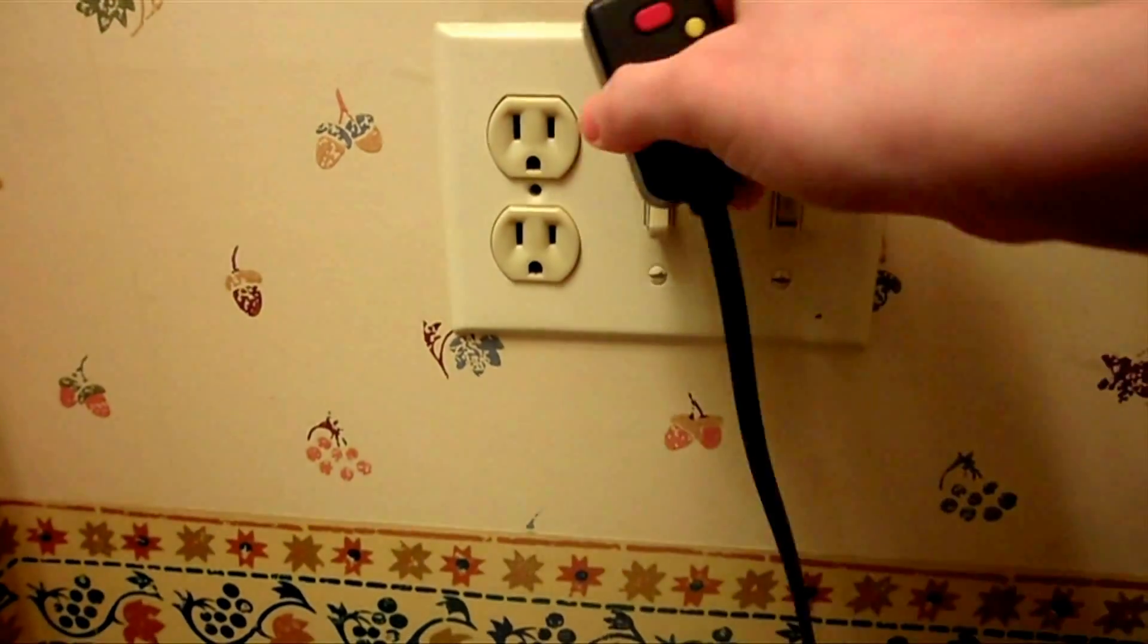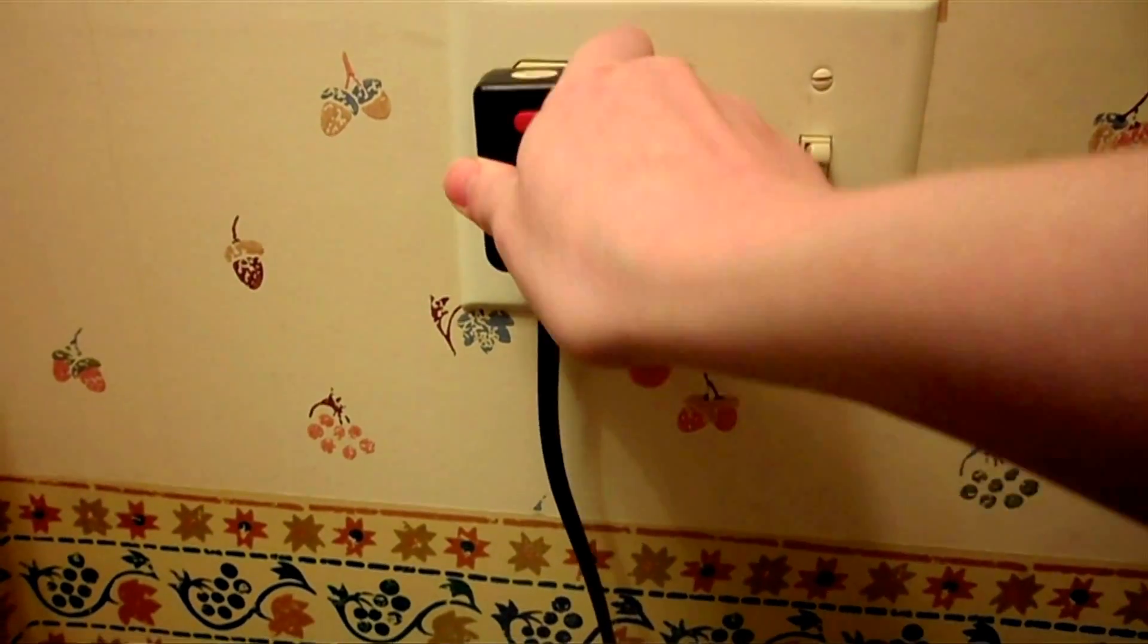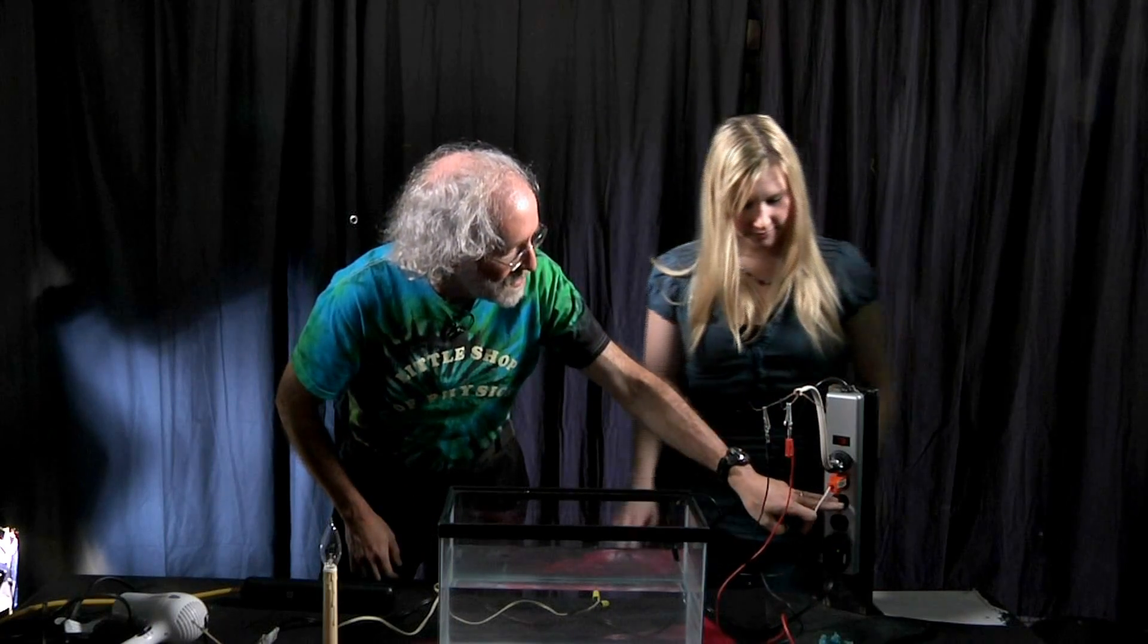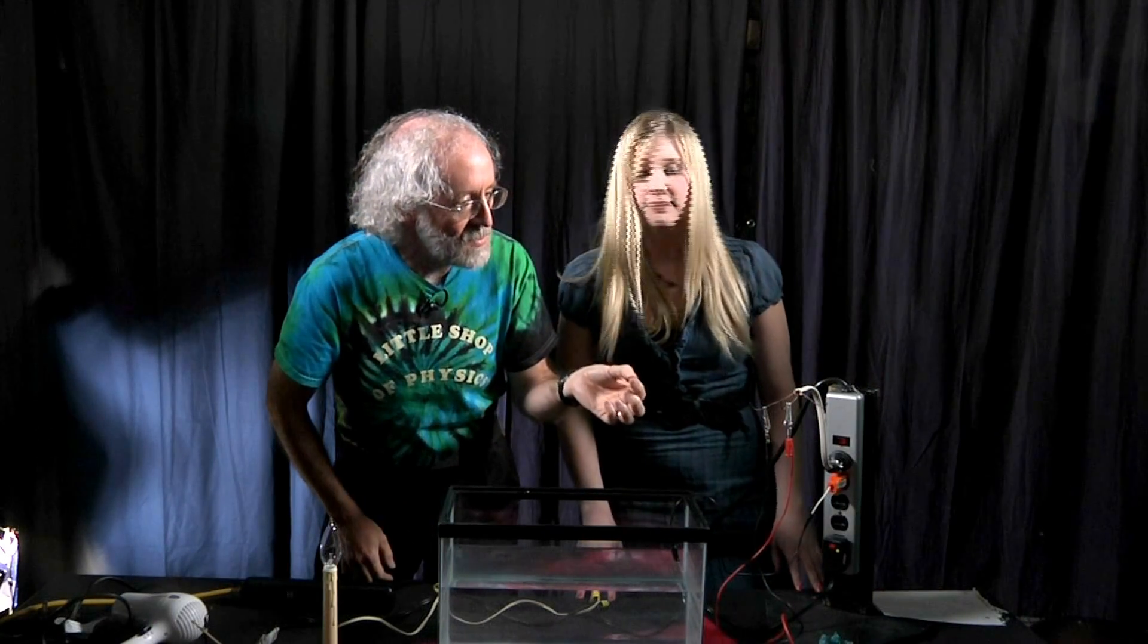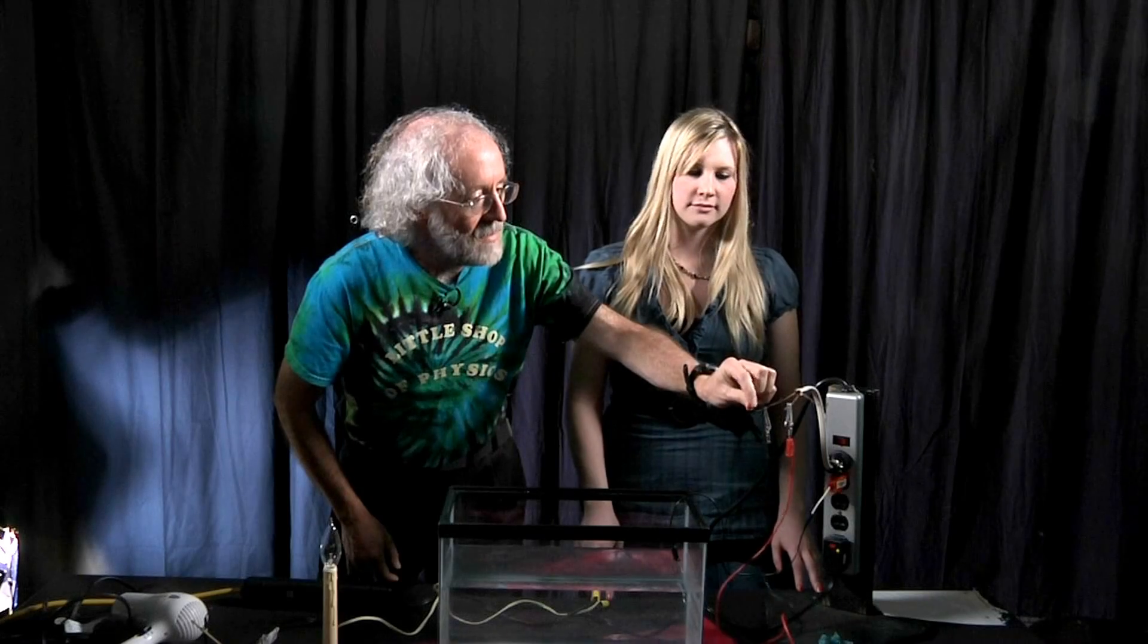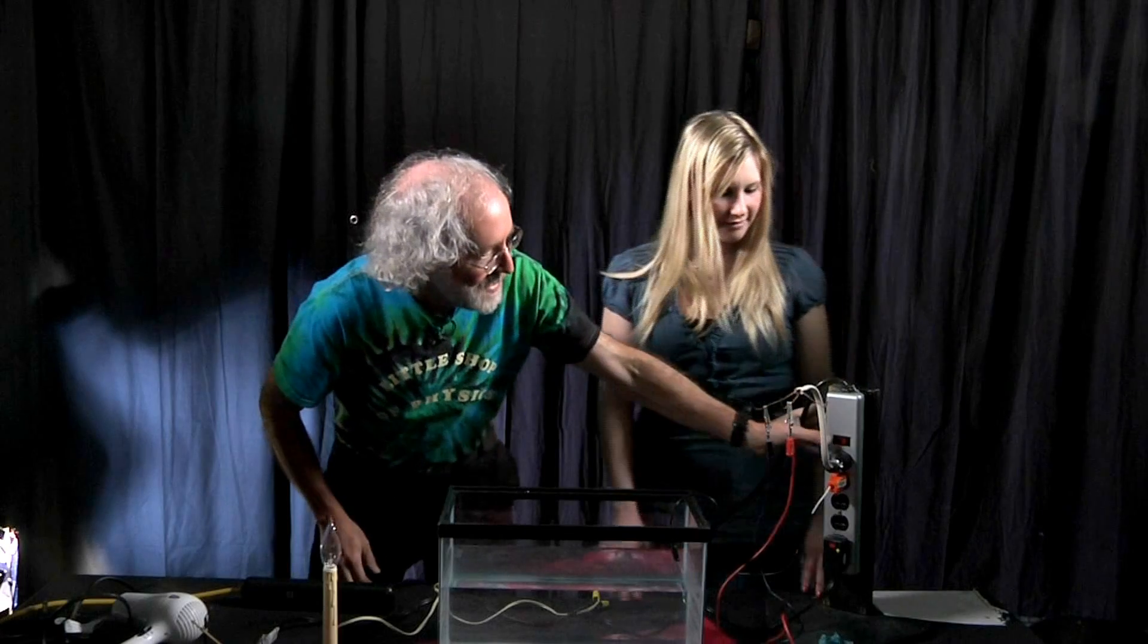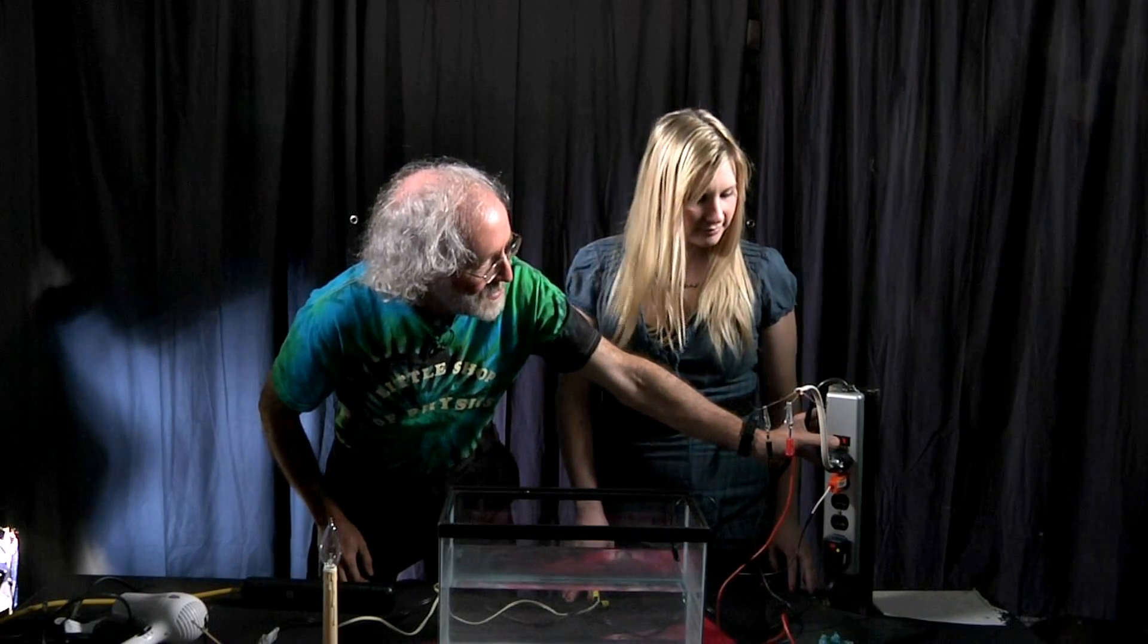Brian explains how electricity works. Electricity always has to flow through a circuit. When you plug something in the outlet, there's two holes. One of them is the hot wire, one of them is the neutral wire. Now the neutral wire right here is actually connected to the earth. It's grounded. And you're connected to the earth. You're grounded as well. And that's where the trouble lies.